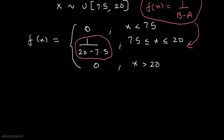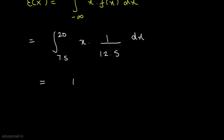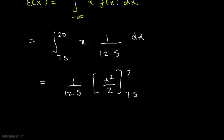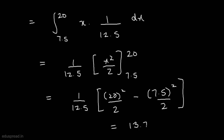Now let's find the expected value of X. We know that E[X] = integral of x · f(x) dx over all values of x, from minus infinity to infinity. Since X takes values between 7.5 and 20, we integrate from 7.5 to 20 of x multiplied by 1/12.5 dx. Integrating, we get (1/12.5) · [x²/2] evaluated from 7.5 to 20, which gives 20² /2 minus 7.5²/2, and solving this we get 13.75. So the expected value of X is 13.75.